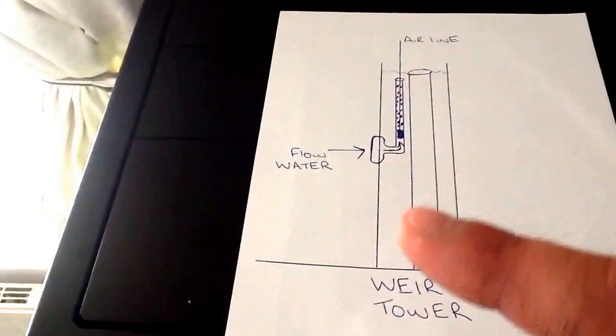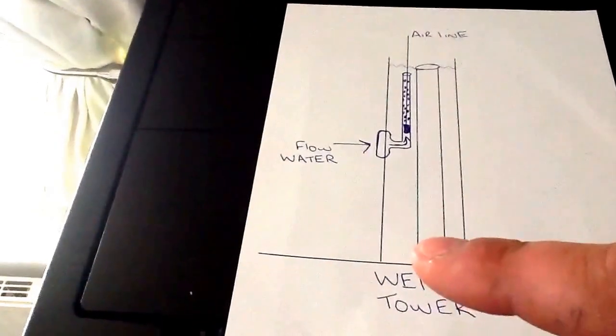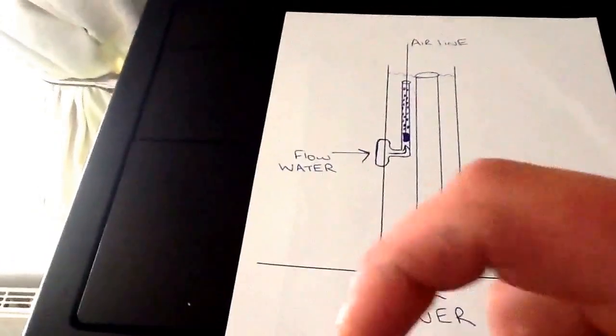So there's the weir down pipe, the return to the sump as such. The sump I imagine would be below.